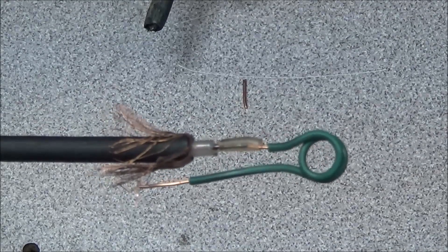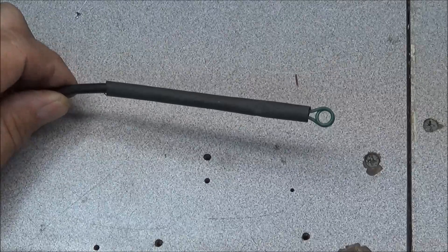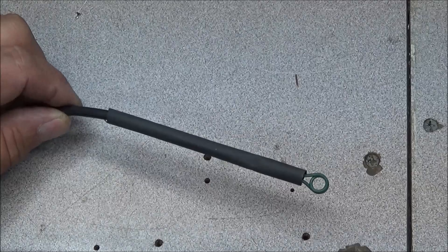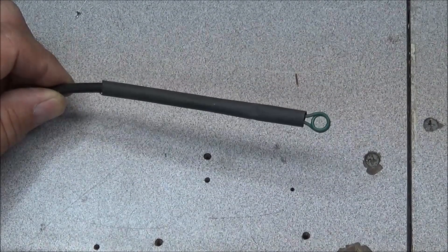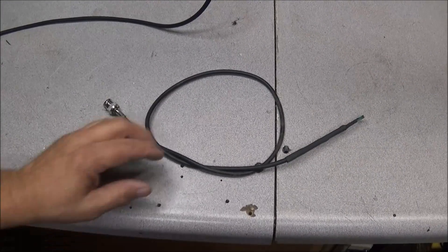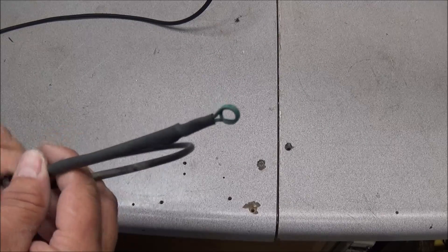Now we have that soldered in place, and I have our heat shrink tubing over it. Now I'll just heat the heat shrink tubing, we'll put a BNC end on the other end, and our cable will be just about finished.